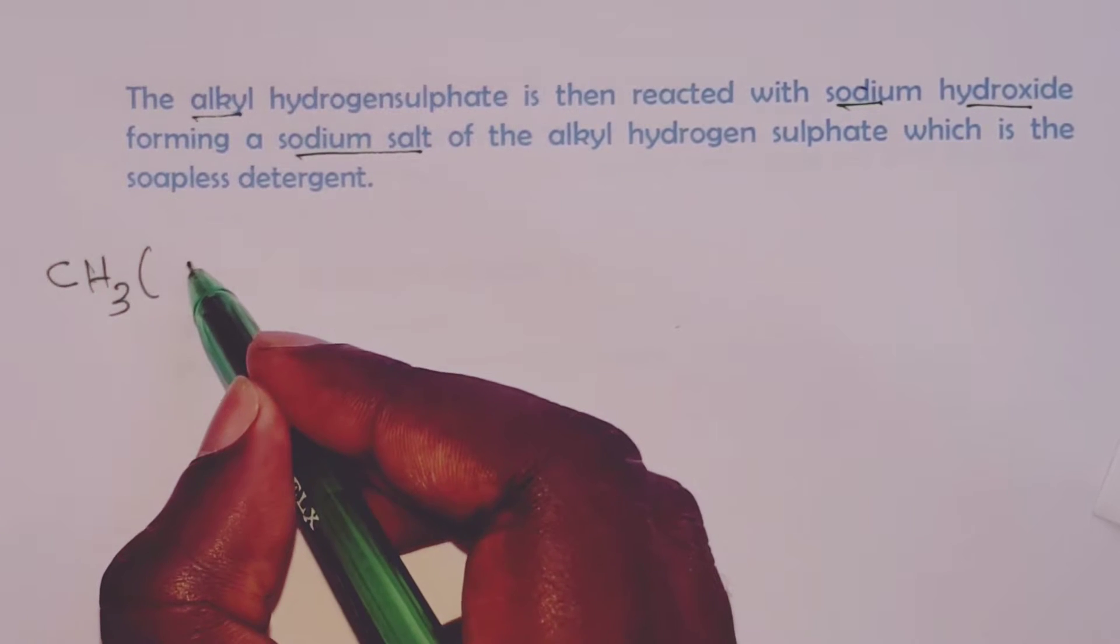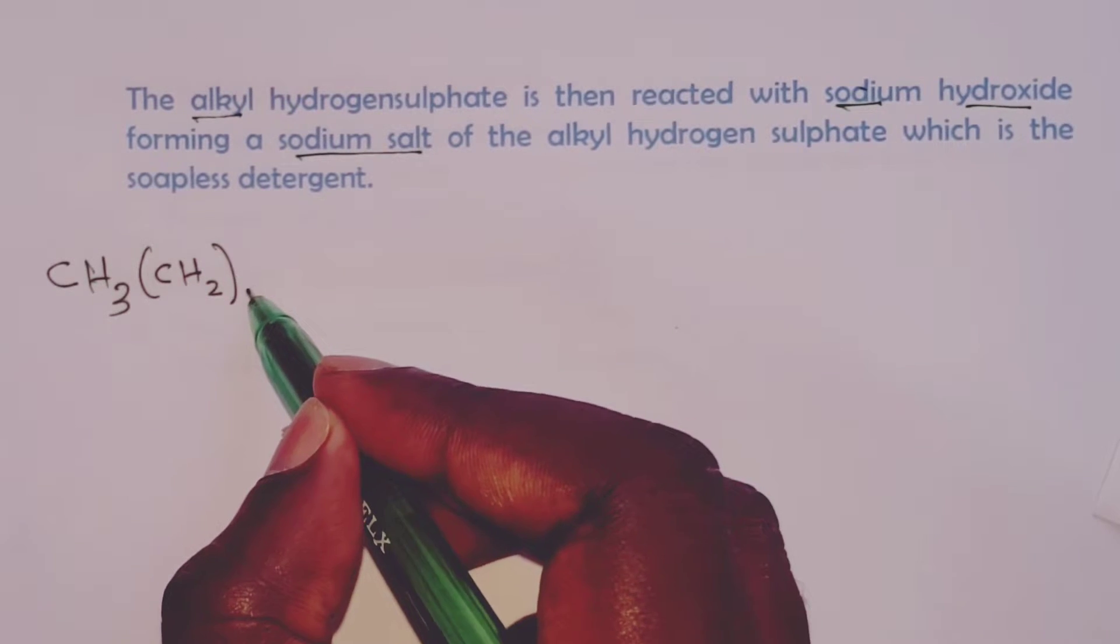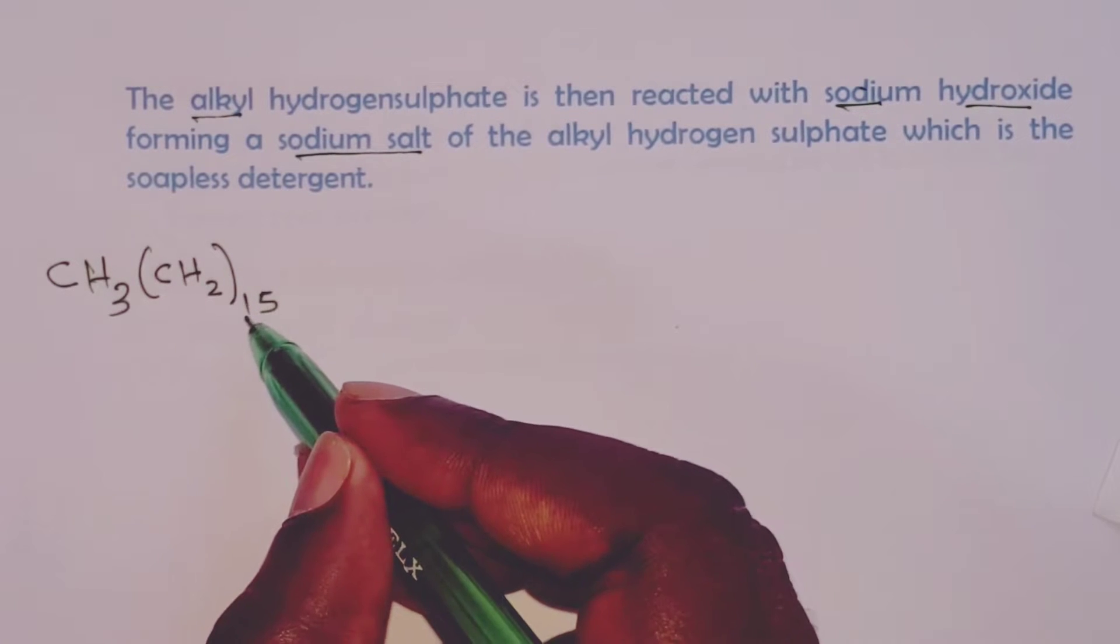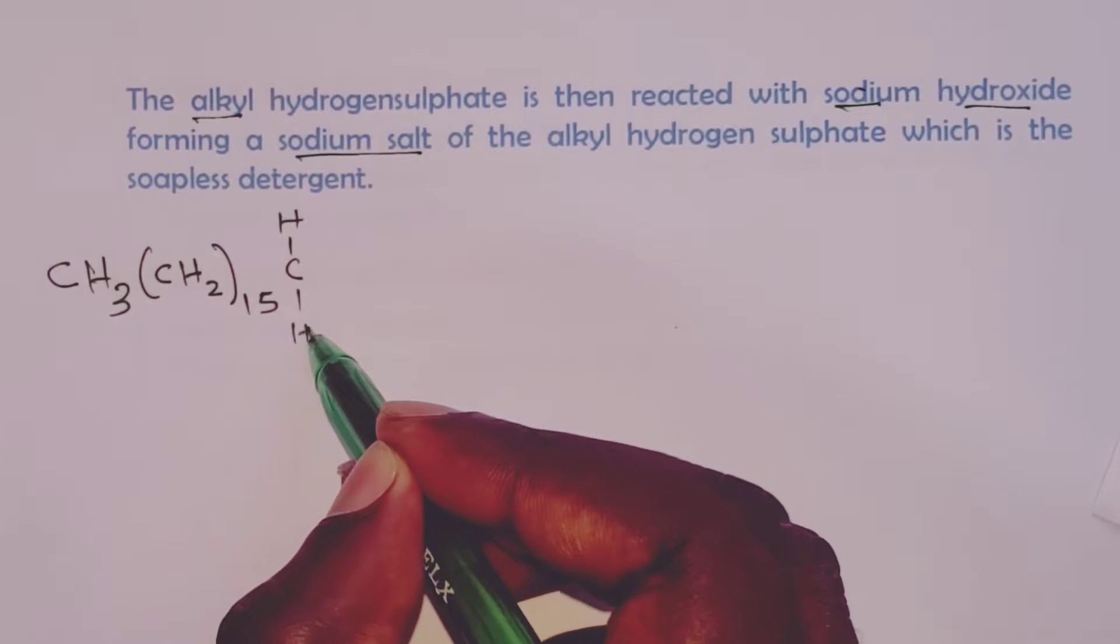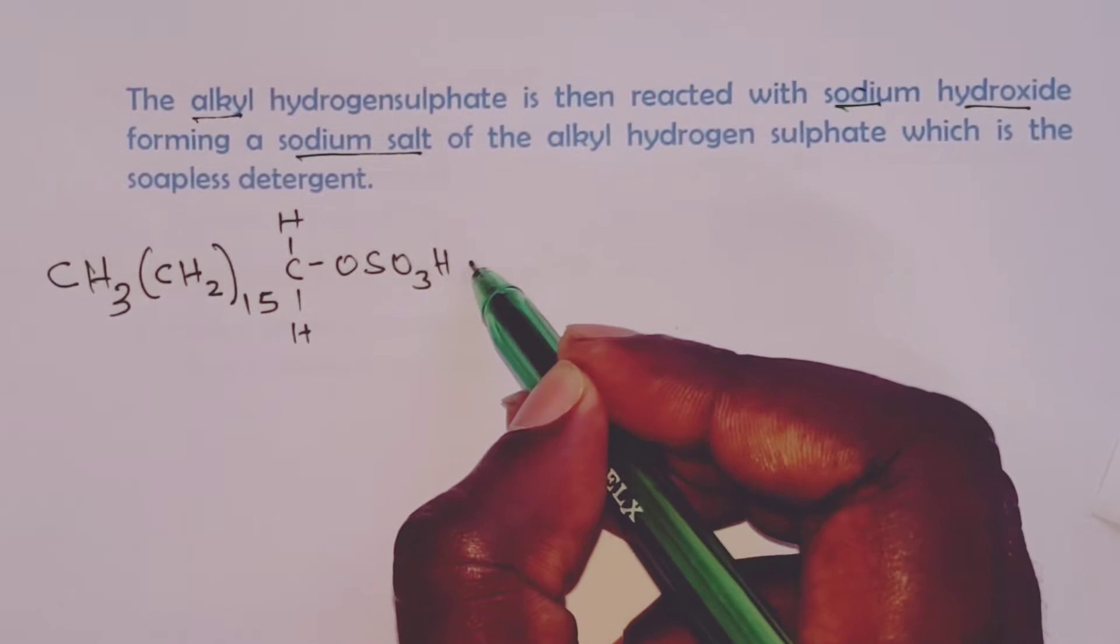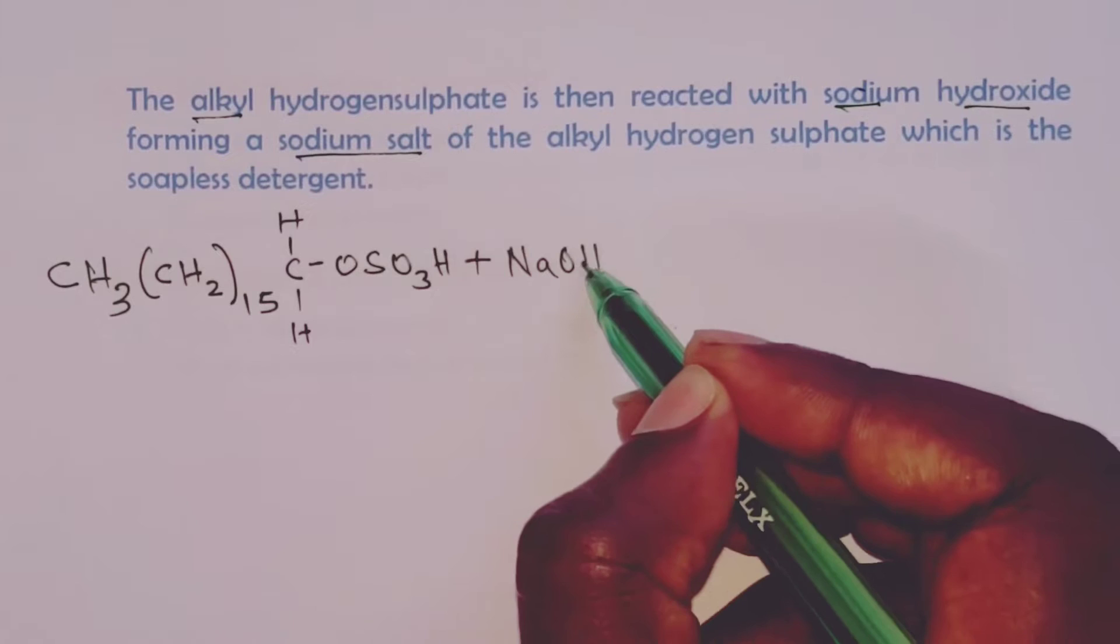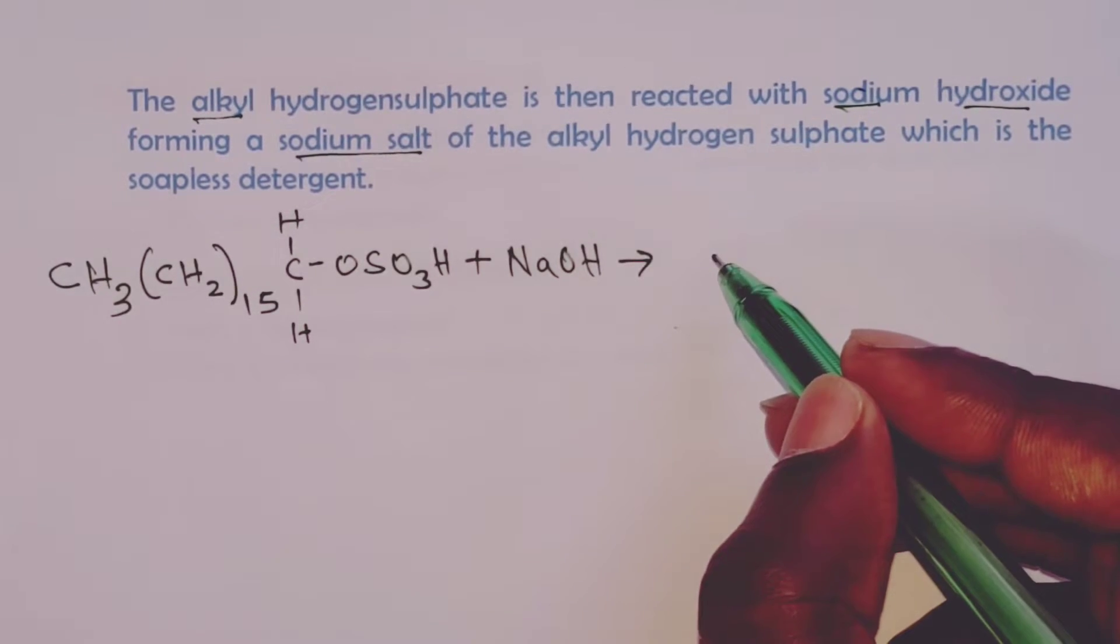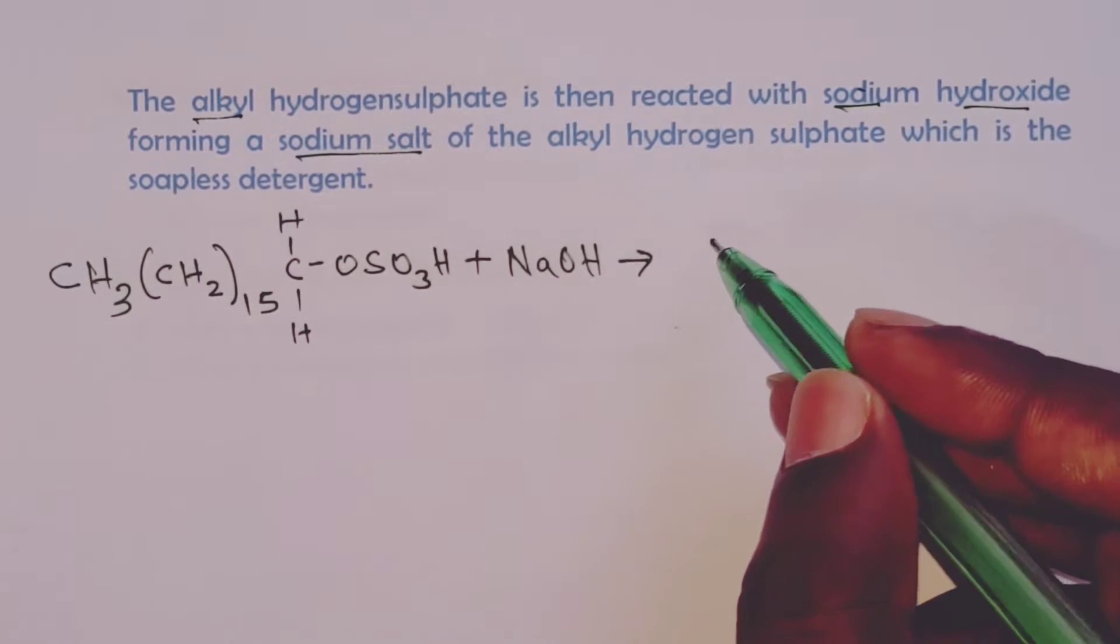We begin with our alkyl hydrogen sulfate, whose formula we wrote a few minutes ago. It was CH3, CH2 15 times, CH2, and then OSO3H. This one now we shall react with the alkali sodium hydroxide, and we get what is the sodium salt that we shall call soapless detergent.